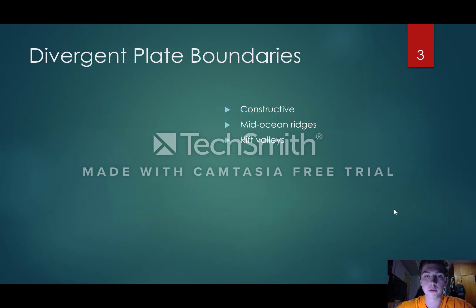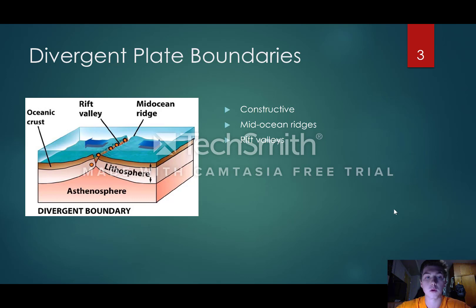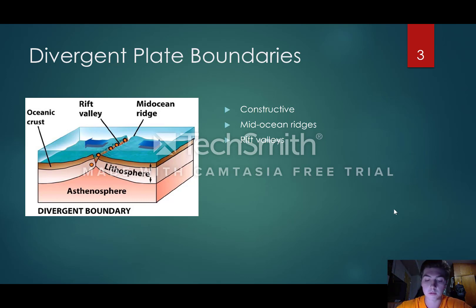A divergent plate boundary is when two plates are being pulled apart. It starts as two continental plates being pulled apart and as they separate they create a rift valley. As they pull apart, magma rises up and as that magma reaches the surface it cools and hardens, creating this rift valley, which generally becomes a path for water.